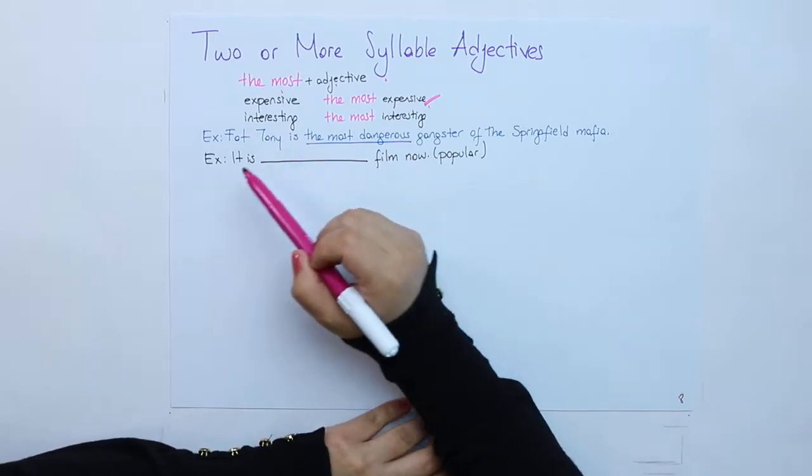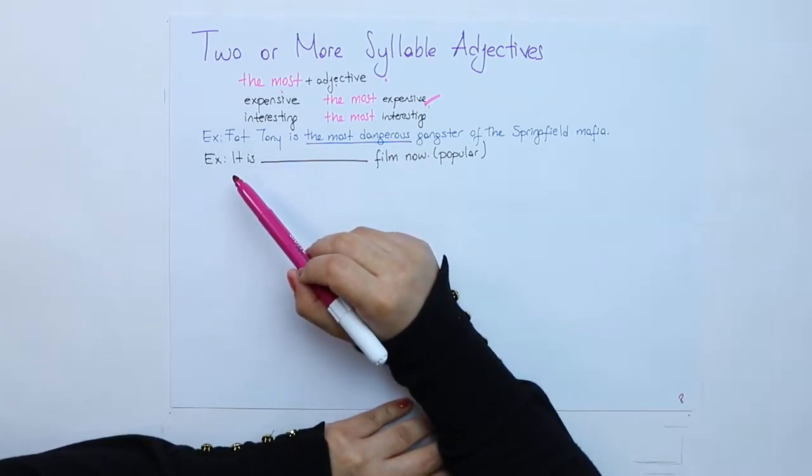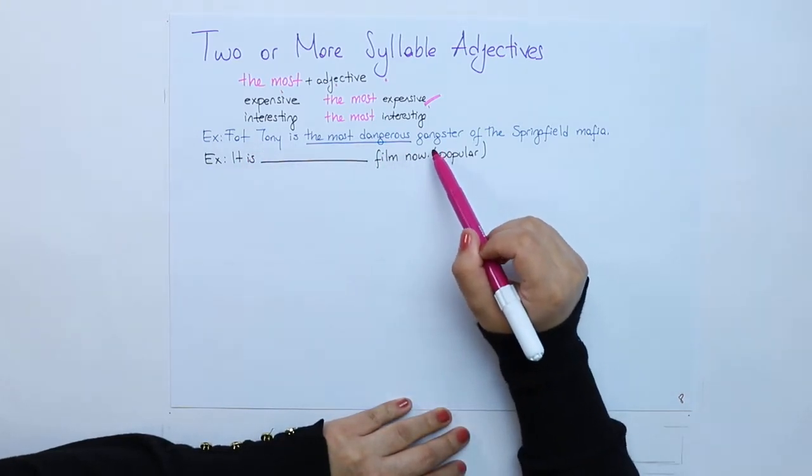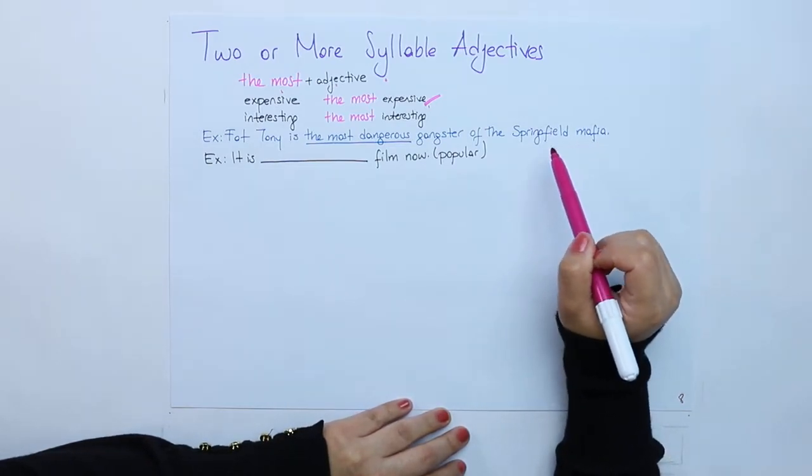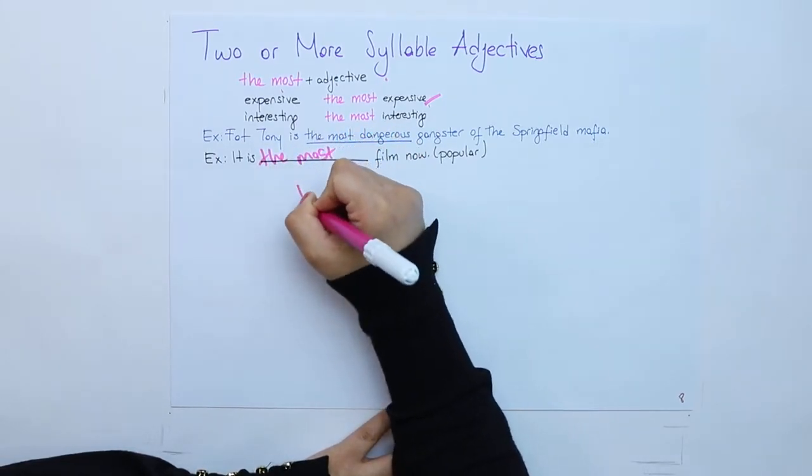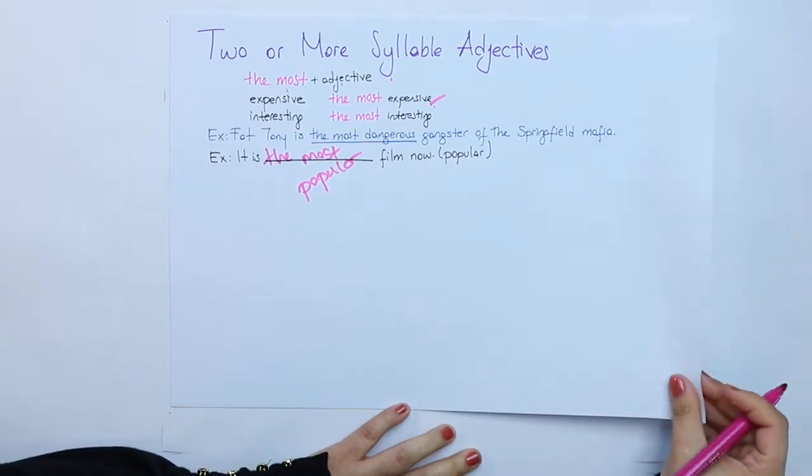Let's look at them in the example, in a sentence. Tony is the most dangerous gangster of the Springfield Mafia. It is the most popular film now.